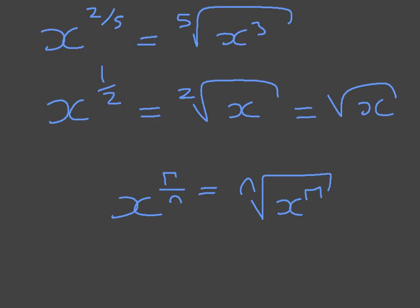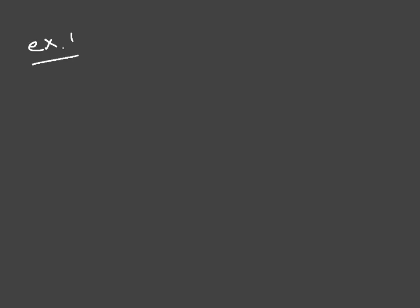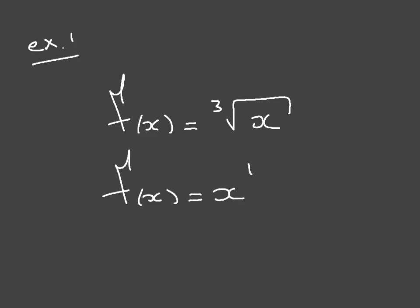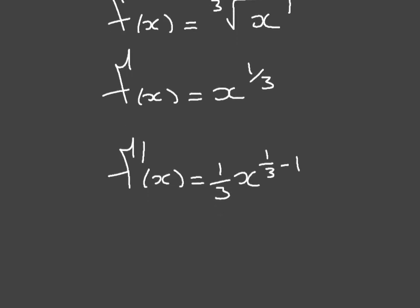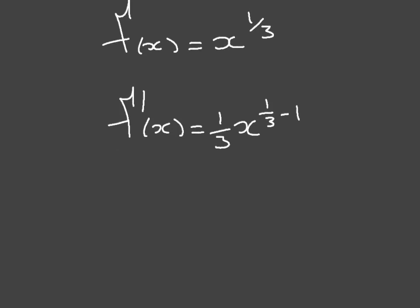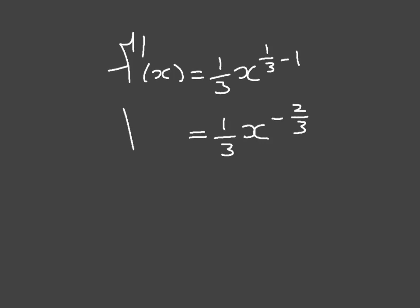Now let's see how this helps us differentiate more complicated functions. Example 1: differentiate f of x equal to the cubic root of x. This is the same as f of x equals x to the power of 1 third. Using the power rule, the derivative f dash of x is equal to 1 third times x to the power of 1 third minus 1. Since 1 third minus 1 is negative 2 thirds, this gives us 1 third times x to the power of negative 2 thirds. This is a perfectly valid final answer.